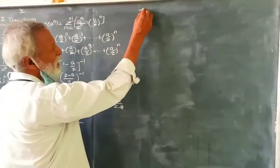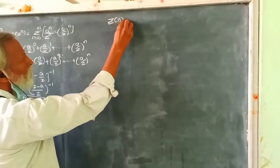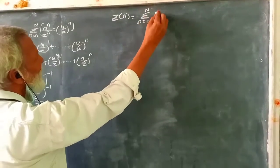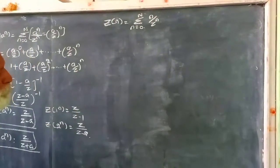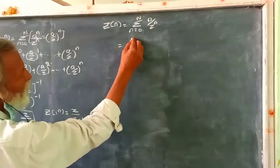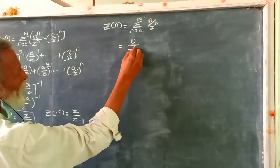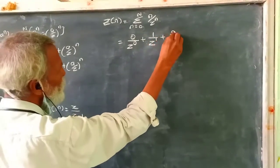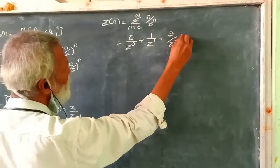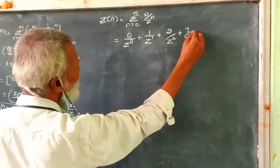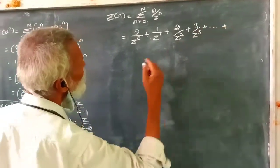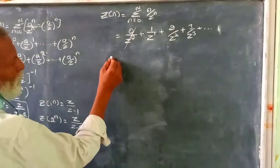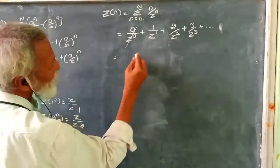Z transform of n. Summation n equals 0 to infinity, n divided by z^n. That's 0/z^0 plus 1/z^1 plus 2/z^2 plus 3/z^3 and so on.